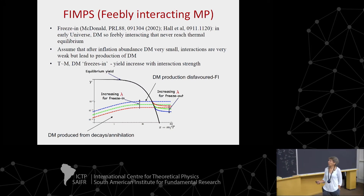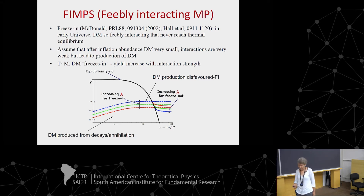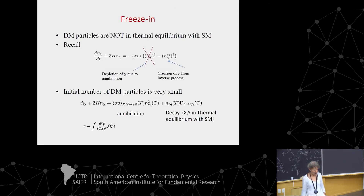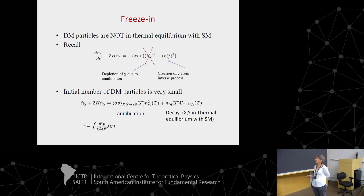This is the general picture for the abundance as a function of inverse temperature. In freeze-out, you start at equilibrium and eventually decouple; the stronger the interaction, the less dark matter you have. In freeze-in it's the other way: you start with very little dark matter, and it's produced from decays and annihilations. If you increase the coupling, you have more dark matter particles. Calculating the relic density means solving a Boltzmann equation with two terms: depletion from annihilation and creation from the inverse process.